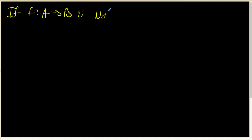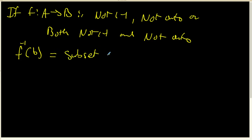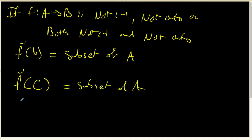The more general notion of pre-image is what we deal with whenever functions are either not one-to-one or not onto. To wrap up: if f from A to B is not one-to-one, not onto, or both, it's important to remember that f-inverse of a particular element is a subset of the domain, and f-inverse of a subset C of the codomain is also a subset of the domain. That ends this quick review of pre-image notation.